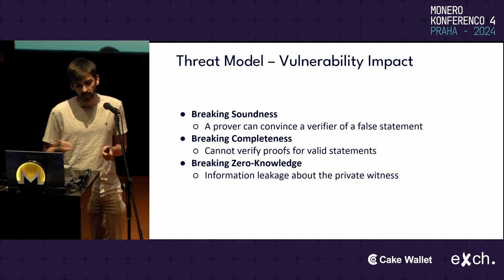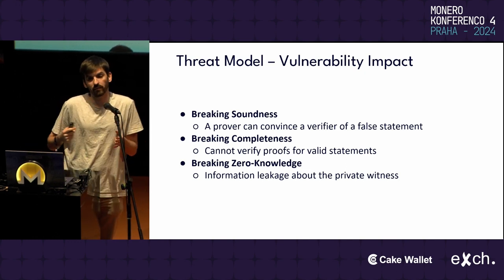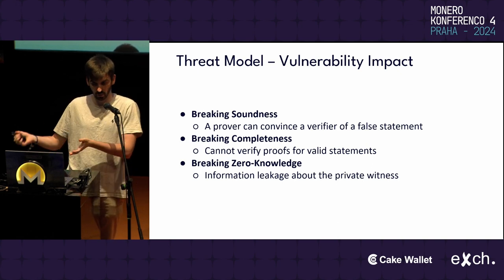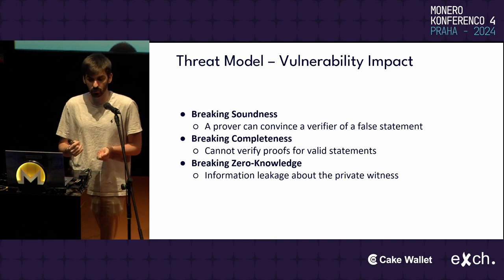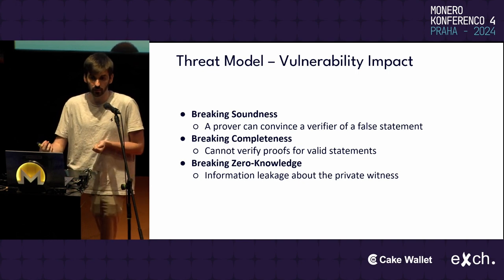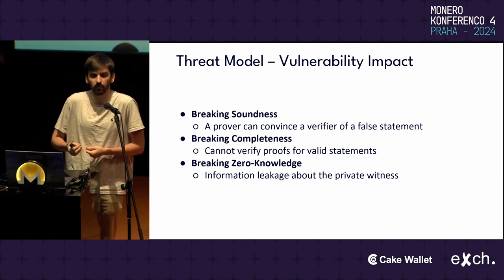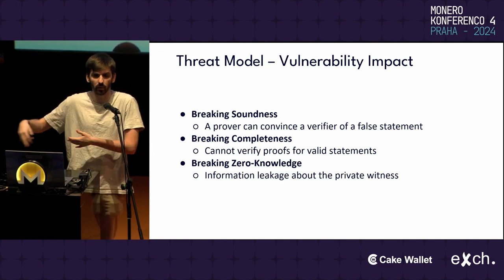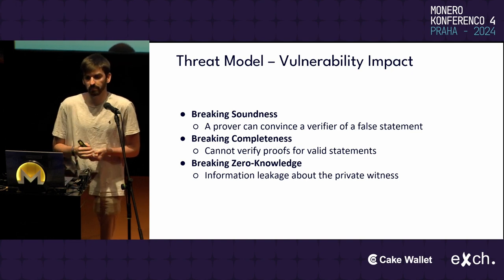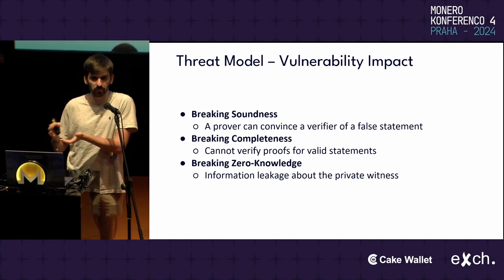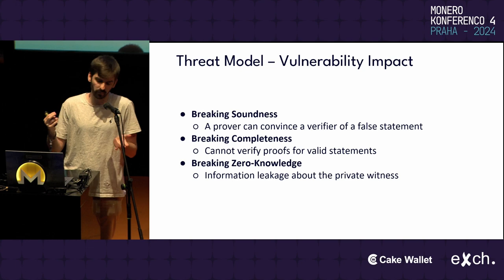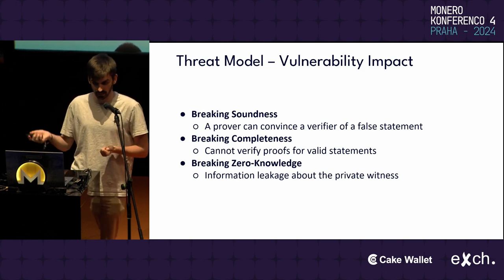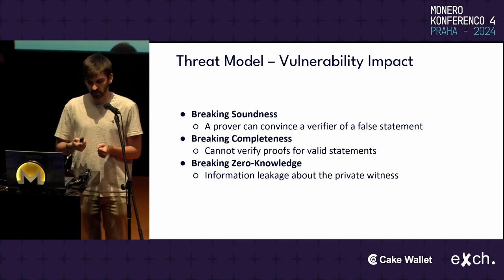What can go wrong? First, we can have a vulnerability that breaks soundness of the zero-knowledge proof, meaning a prover can convince a verifier of a false statement. Imagine the simplest example: a circuit that proves a plus b equals c — the prover could convince the verifier that one plus one equals five, which is wrong. That means soundness is broken.